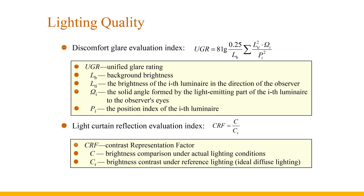Third, lamps of the same type are arranged evenly at equal intervals. Fourth, the lamps have double symmetrical light distribution. Fifth, the eye height of a sitting observer is 1.2 meters and the eye height of a standing observer is 1.5 meters. Sixth, the observation position is at the midpoint of the vertical and horizontal walls with the line of sight level facing forward, and the glare calculation position is taken as a point 1 meter from the center of the gable wall. Seventh, the room surfaces include the working surface about 0.75 meters above the ground, the lamp installation surface, and the wall between these two surfaces.